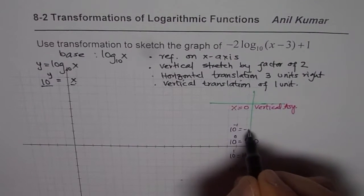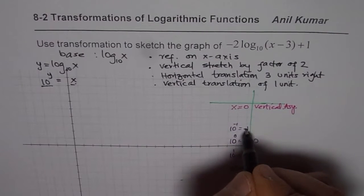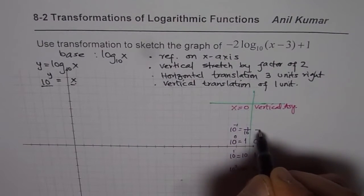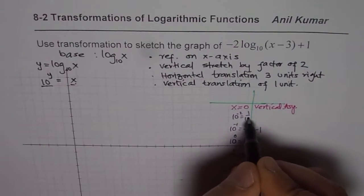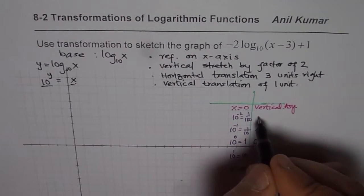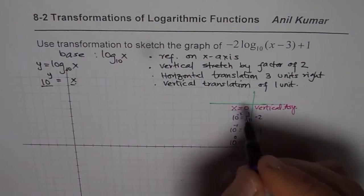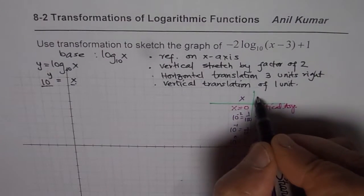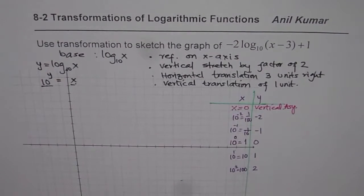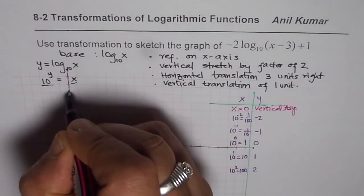10 to the power of minus 1 means x is 1 over 10 and y is minus 1. 10 to the power of minus 2 means x is 1 over 100 and y is minus 2. That exponent is the y value. So if x values are given as powers of 10, the y values are those exponents. We can now plot these points, with x equals 0 as the vertical asymptote.